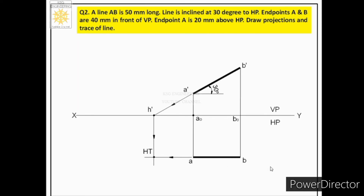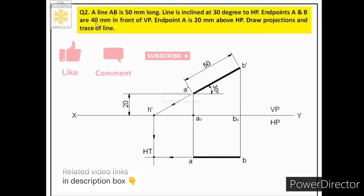After finding the trace, place the dimensions. Draw extension lines from A dash and B dash — these must be perpendicular to the projection — and place the true length of the line, which is 50 mm. Then show the two distances: 20 mm and 40 mm. From the endpoint draw a continuous thin line and place the dimension line. To show the 40 mm dimension, extend the extension line and follow the rule of chain dimensioning to place the other dimension as well.